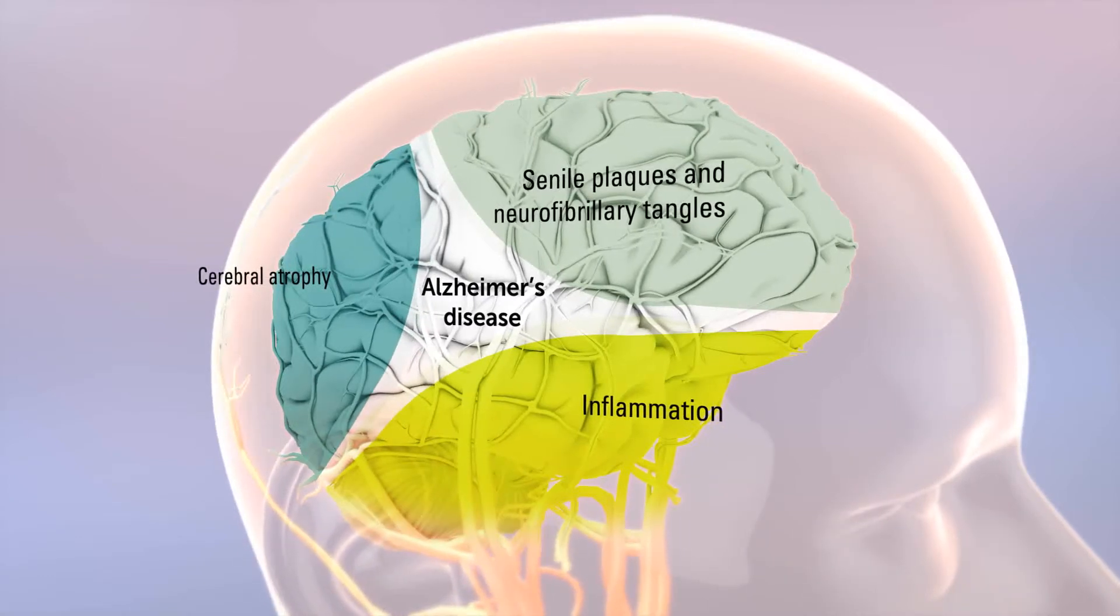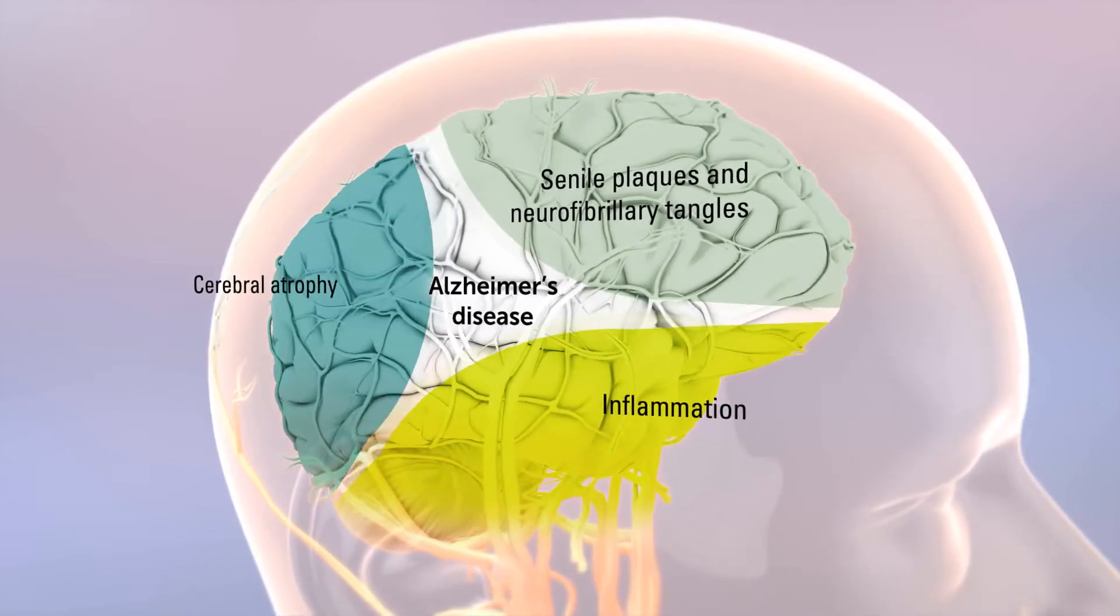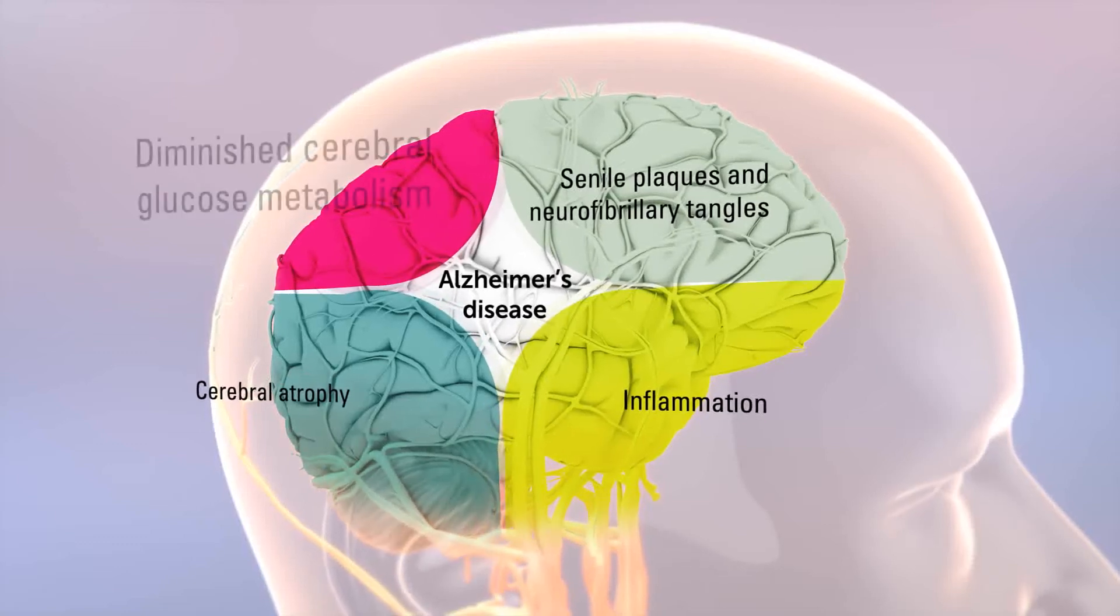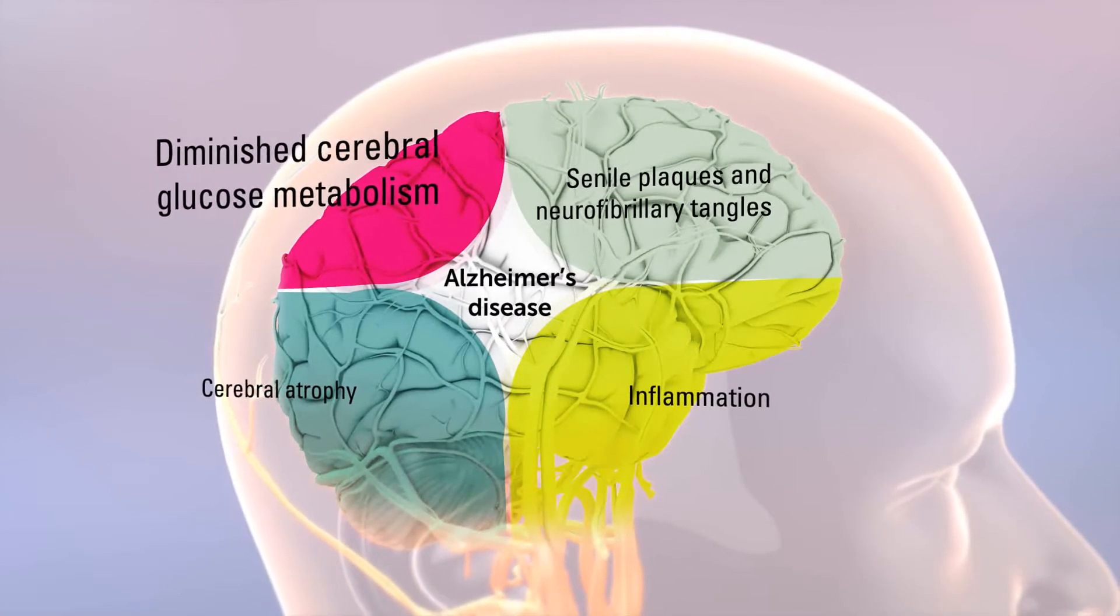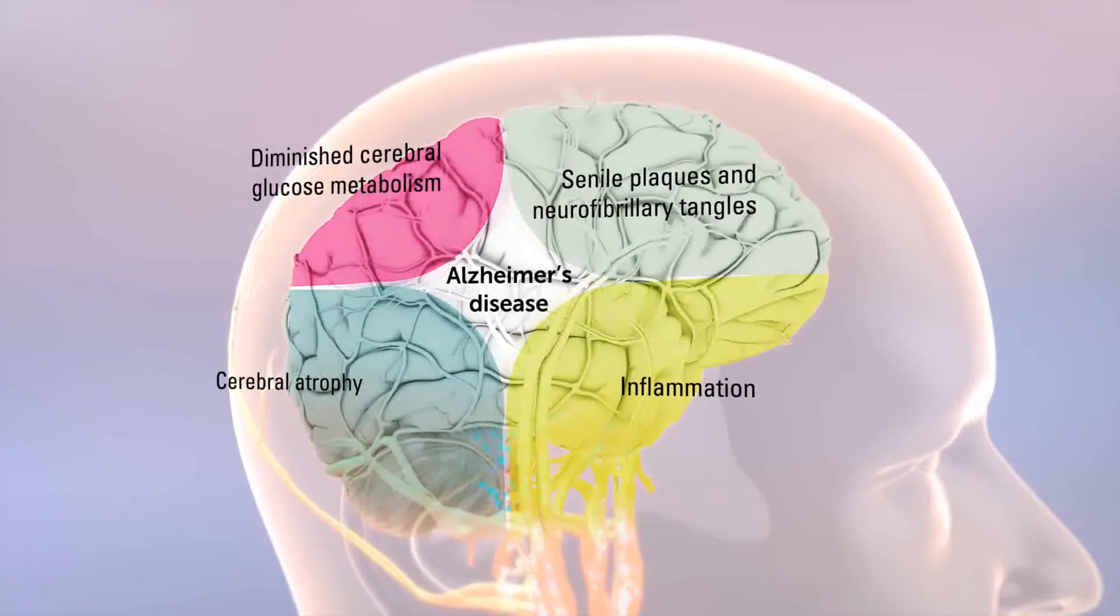Now, extensive evidence from more than three decades of research has revealed a fourth pathology, diminished cerebral glucose metabolism, also known as glucose hypometabolism.